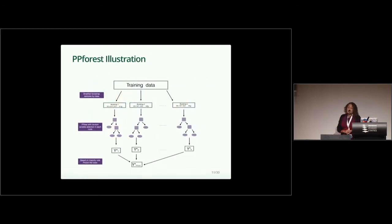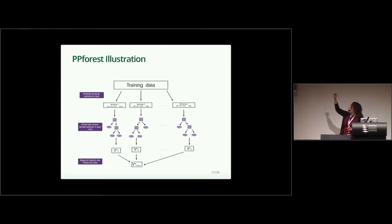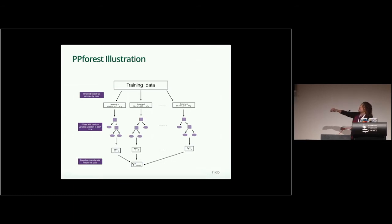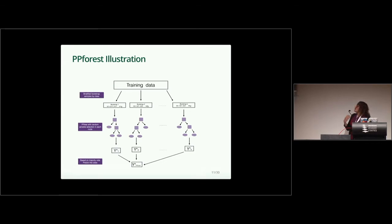What PP forest does is use this individual model with the training dataset. We take bootstrap samples, and for each bootstrap sample we construct a PP tree. The second level of randomness comes from selecting a subset of random variables in each node partition. After that, we have the prediction for each tree, and to get the final prediction of our forest, we use majority vote.